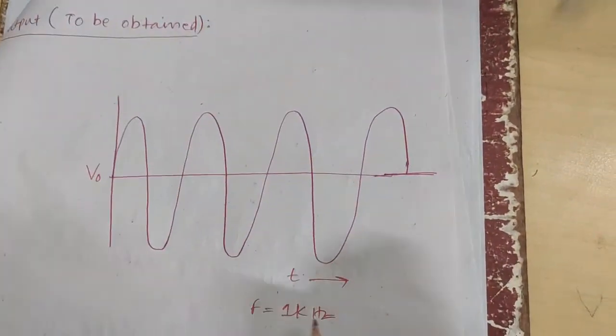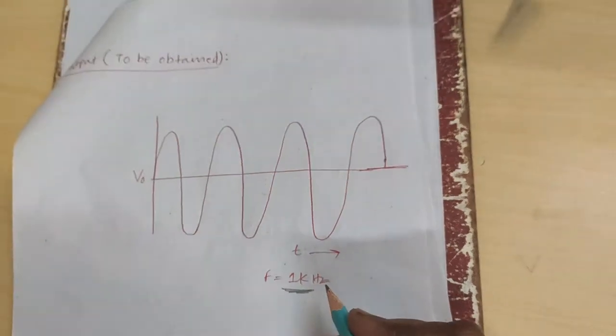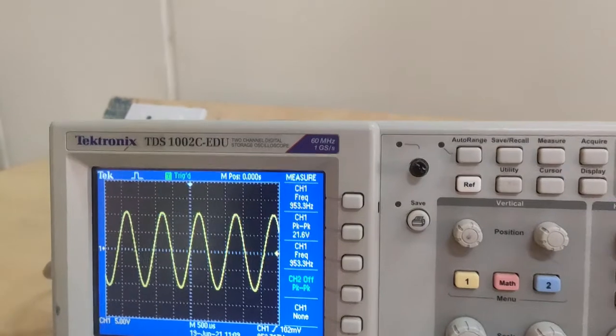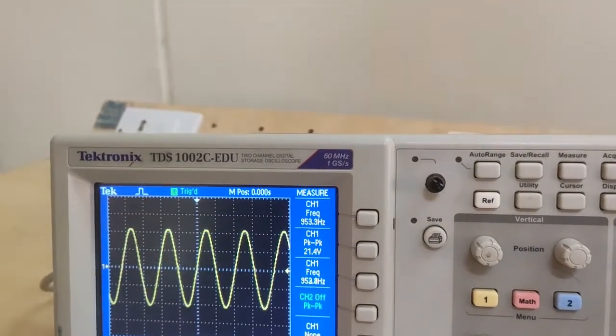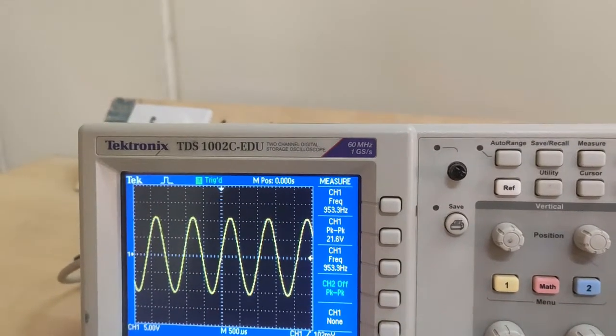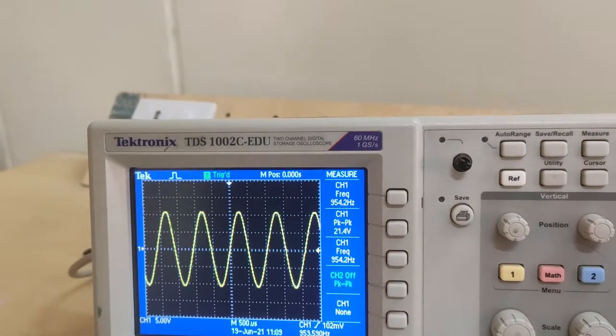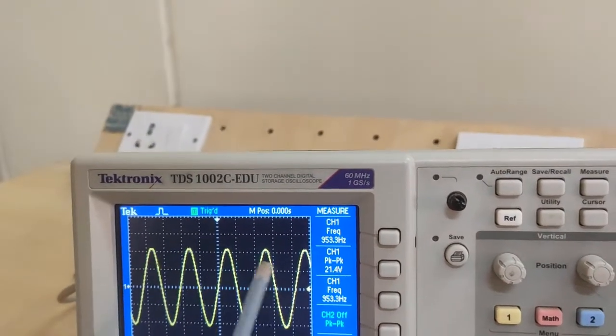Calculated frequency is 1 kHz. Finally, a Wien bridge oscillator was designed and set up for a frequency of 1 kHz and the output waveform is observed.